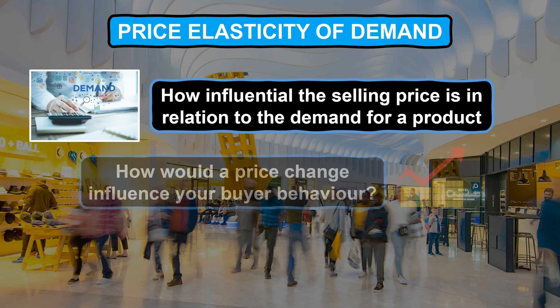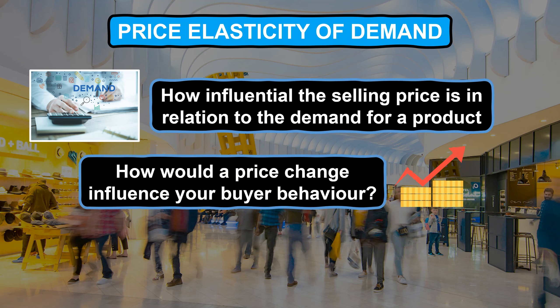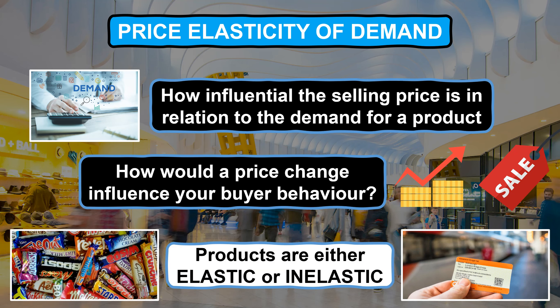For example, imagine a product that you purchased on a regular basis was increased by 10% — would this stop you buying it in the future? Now imagine that same product was on sale and reduced by 20% — how would this influence your buyer behaviour and that of the business's other customers? This is what the business needs to calculate before making any decisions about changes to the selling prices of their products, knowing whether its products are elastic or inelastic.